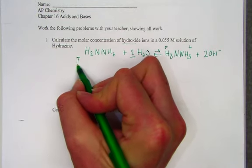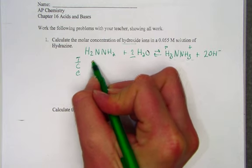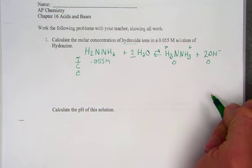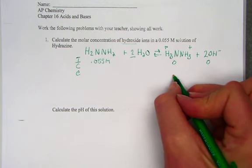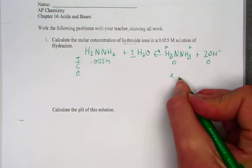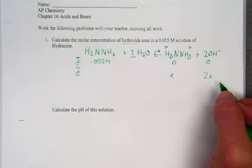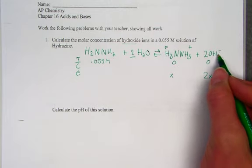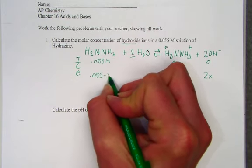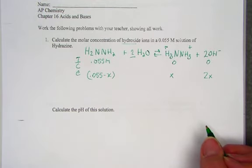We know that the initial concentration of hydrazine is 0.055 molar, and 0.0 for the initial here. Knowing that at equilibrium, we'd have a value of X for the protonated hydrazine ion, and a value of 2X for the value here of both hydroxides. And at equilibrium, we'd have 0.055 minus X as the concentration left in solution of the original hydrazine.